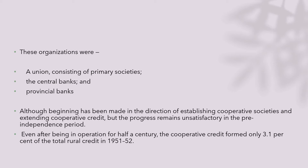In the beginning, we could see that establishment of cooperative societies and extension of cooperative credit were there, but the progress remained unsatisfactory, especially in the pre-independence period. We could understand that the Britishers, even though they introduced this banking system in India, it was just for helping themselves — it was not to help India. Even after its operation for half a century, cooperative credit formed only 3.1% of the total rural credit, meaning they couldn't cater to the rural needs despite many acts.